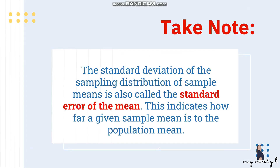The standard deviation of the sampling distribution of sample means is also called the standard error of the mean. It indicates how far a given sample mean is from the population mean — it measures the average distance of a sample mean from the population mean.